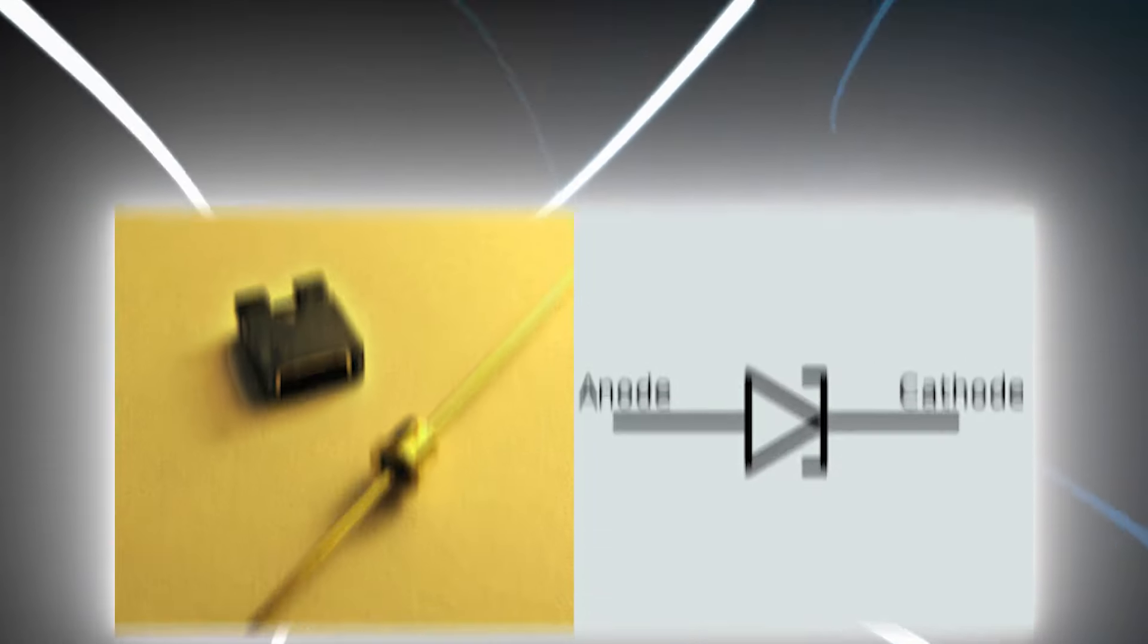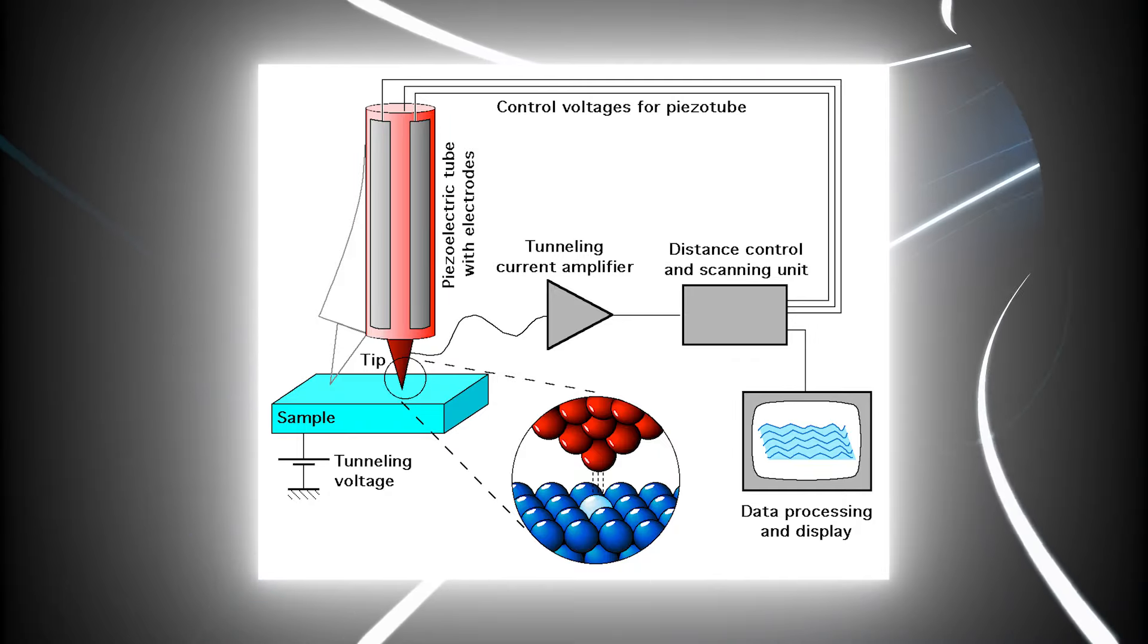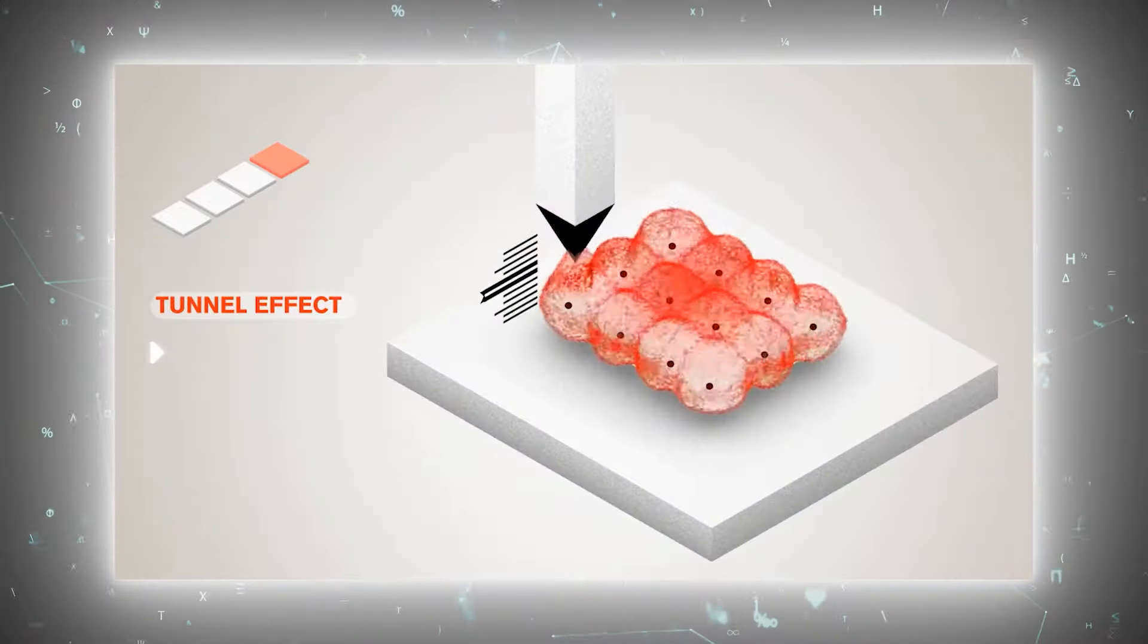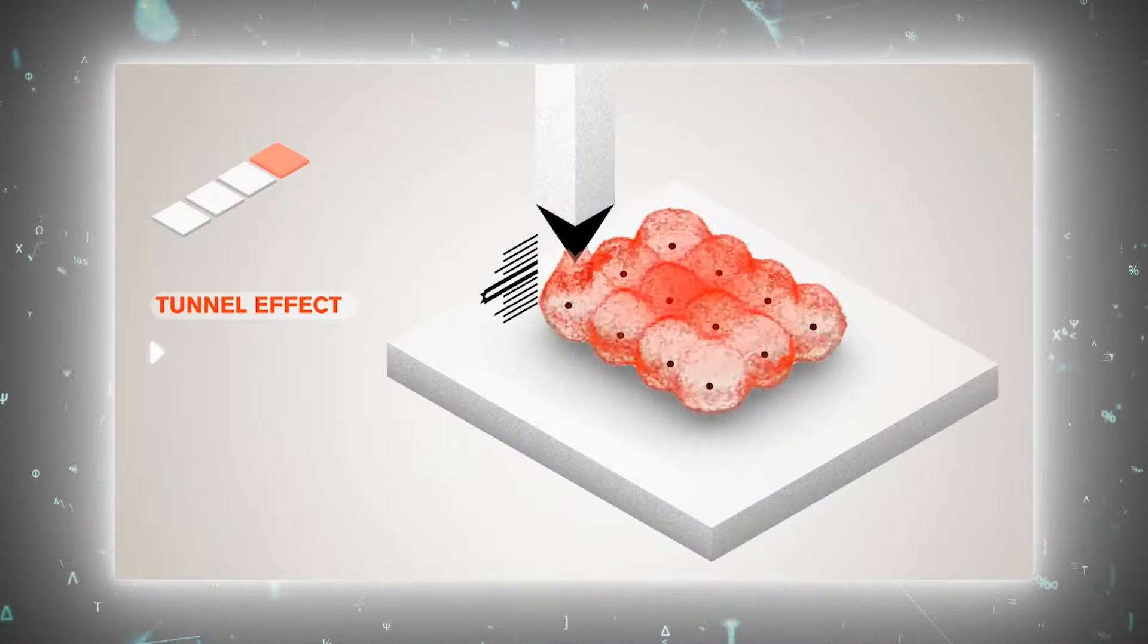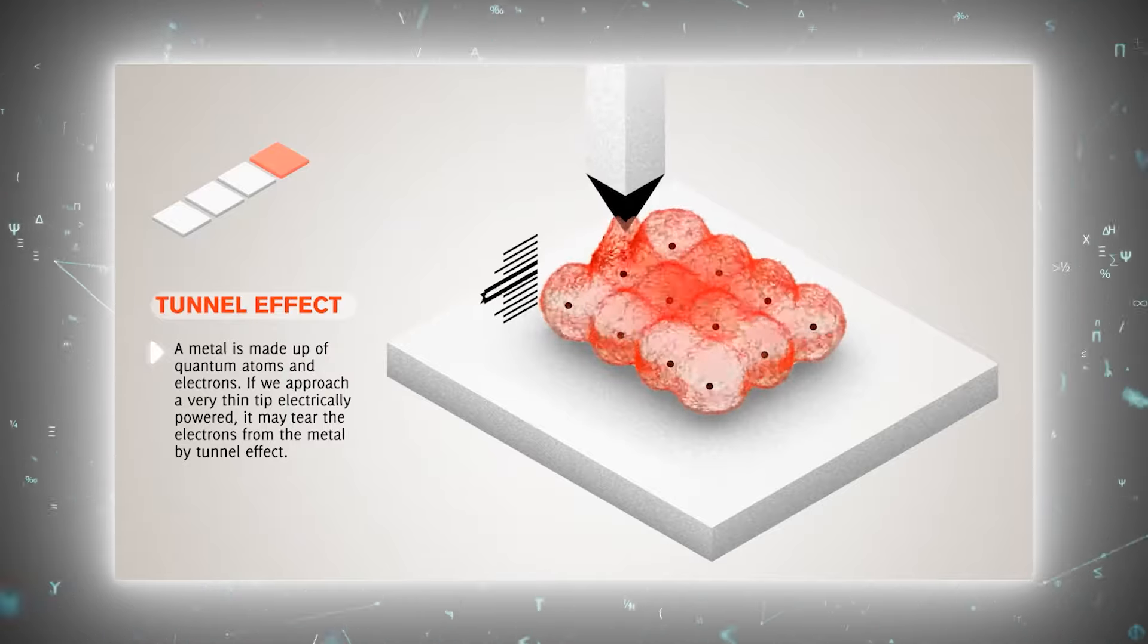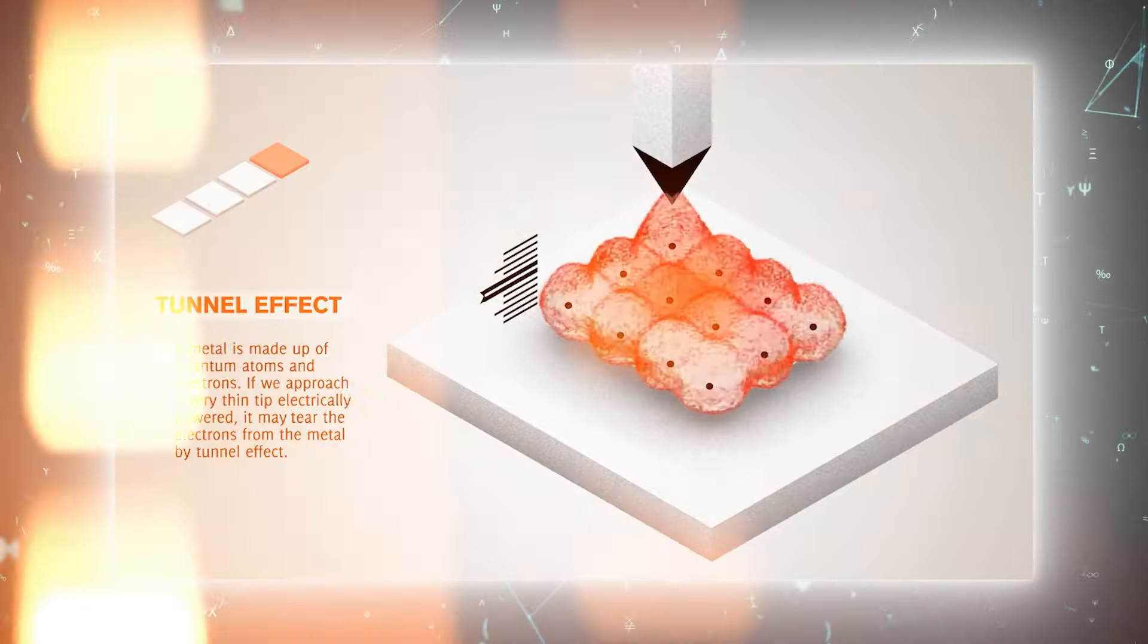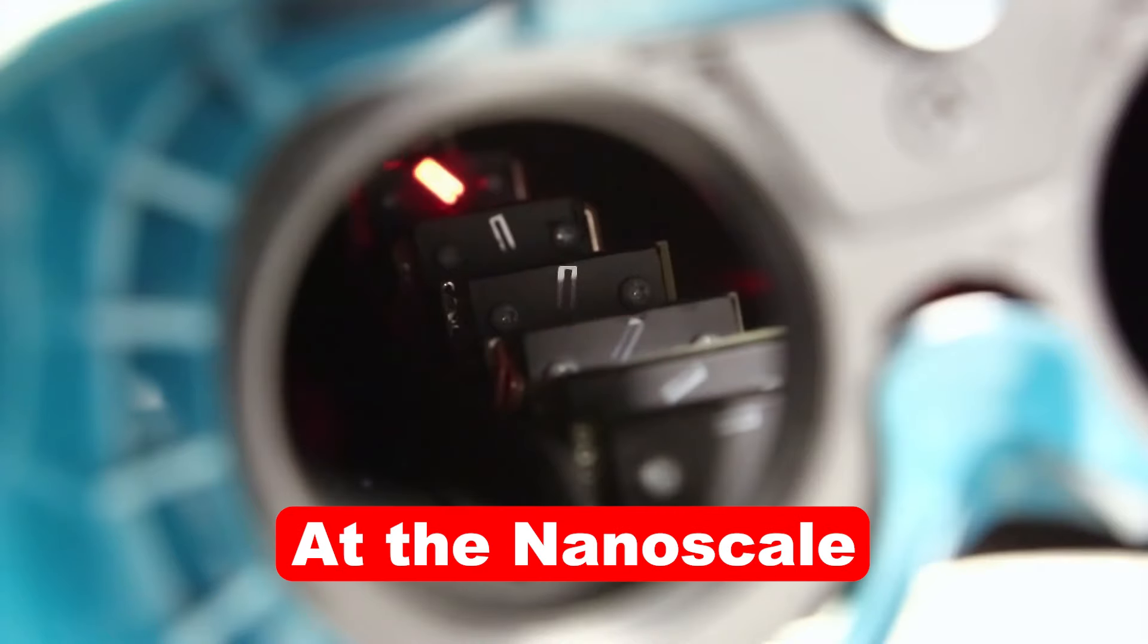In technology, quantum tunneling is the principle behind the operation of tunnel diodes and scanning tunneling microscopes, STM. An STM can image surfaces at the atomic level by exploiting the tunneling of electrons between a sharp tip and the sample surface. This has revolutionized our ability to study and manipulate materials at the nanoscale.